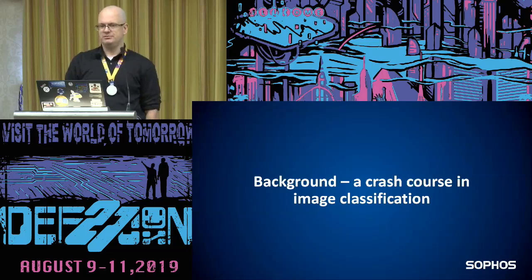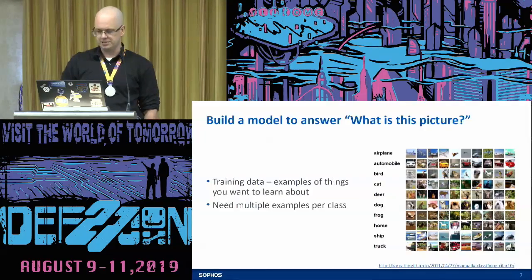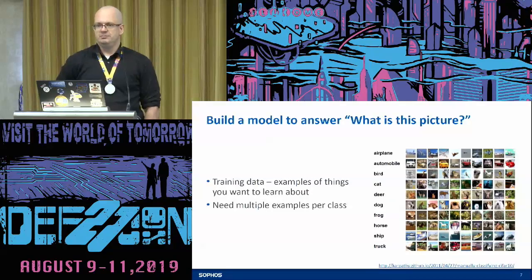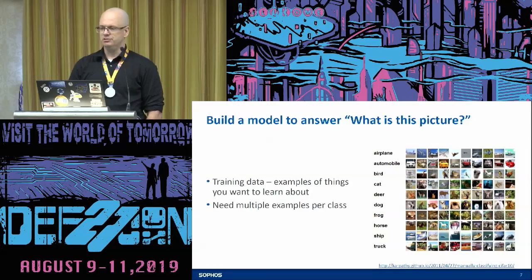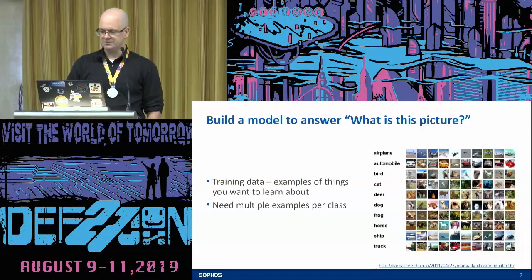Crash course in image classification. Image classifiers: you give them a bunch of pictures and say, what is this? You get training data — hundreds of pictures of airplanes, hundreds of pictures of dogs, frogs, and horses — and you use it to train a classifier.